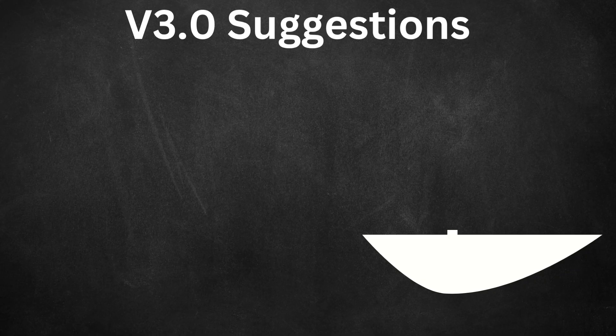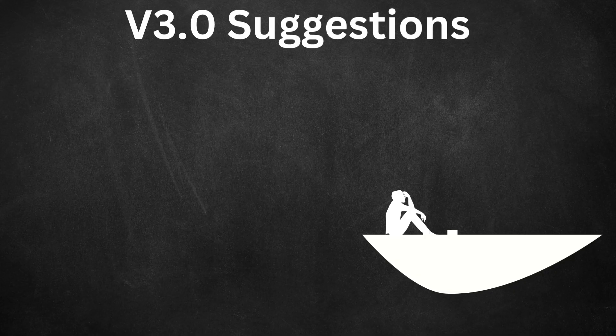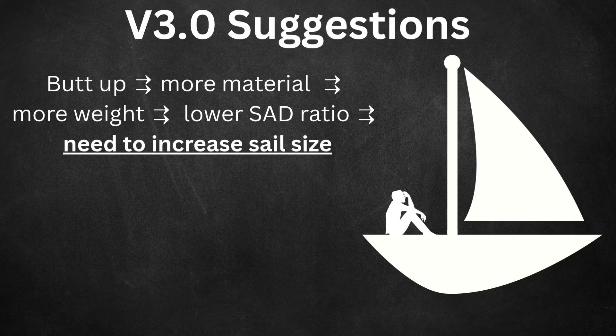Now I have some of my own improvements for version 3.0, so perhaps we can go back to the drawing board. Let's see. We could make the bow shape more consistent. And we should probably protect our guy's butt from some sharks. But that means more material, which means more weight, which decreases our sad ratio, which means we need a bigger sail to compensate.